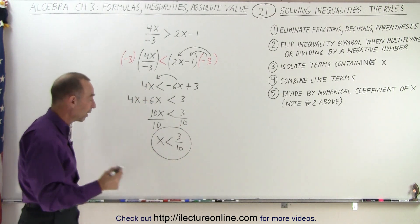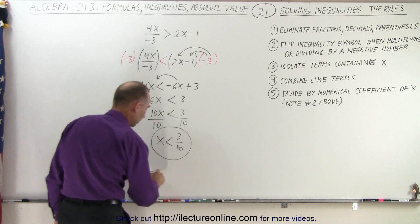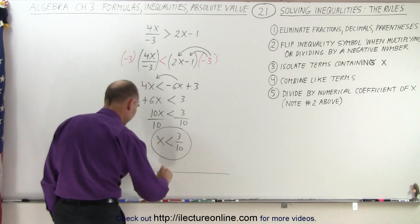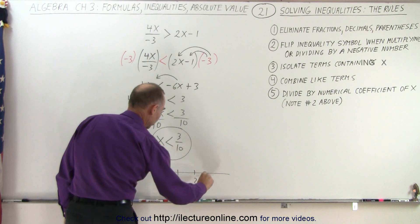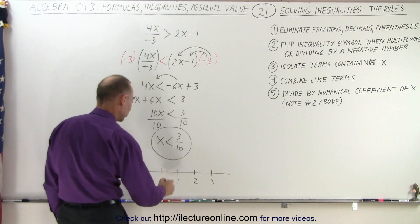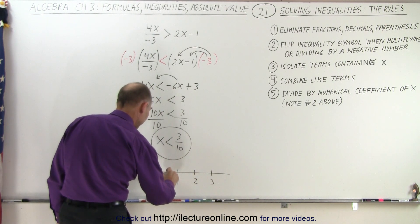If you want to see that in a graphical format, you draw a number line. Here you have the number 0, the number 1, the number 2, the number 3, and so forth, which means 3 tenths falls right about here.